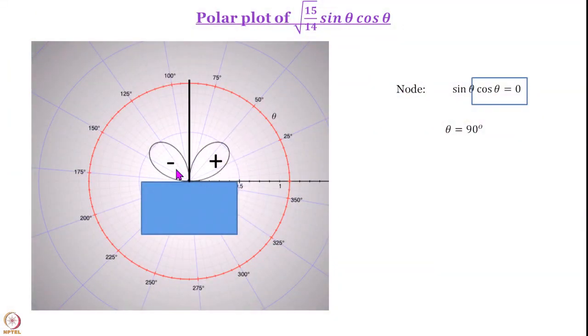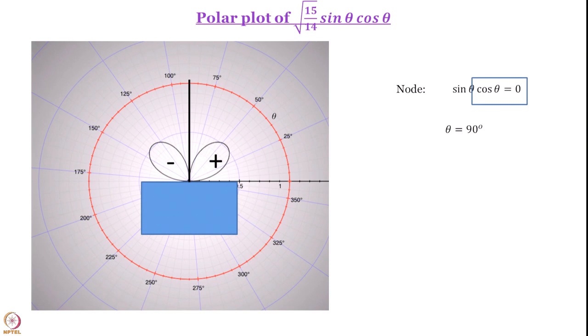We write the signs explicitly: in the first quadrant the sign is positive, in the second quadrant the sign is negative. The two regions are called lobes — a lobe with a plus sign and a lobe with a minus sign. The plus lobe is the region where the wave function Θ has a positive sign, and the minus lobe is where it has a negative sign. This plus and minus represents the sign, or phase, of the wave function in that region.